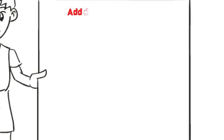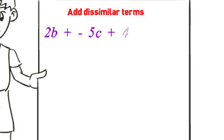Moving on, we are looking at adding dissimilar terms. You cannot add dissimilar terms. So, you just have to write them as it is. Example, 2b plus negative 5c plus 4d plus negative 3e.